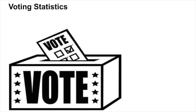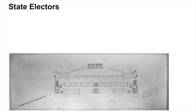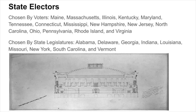With only 1.34 percent of the population voting, a lot of the country was prohibited from voting, including almost all African Americans, women, and non-landowners. At the same time, more and more states were now using the popular vote to select electors, with 15 of the 24 states choosing electors through a method of popular vote.